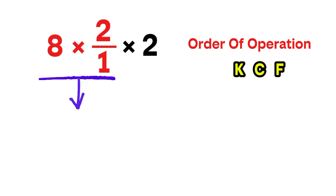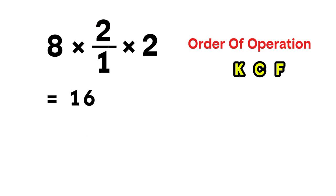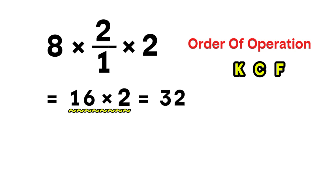We're not done yet, because we still have that times 2 waiting at the end. So now we take 16 times 2, and that gives us 32. And there we go — the correct answer to this expression is 32.